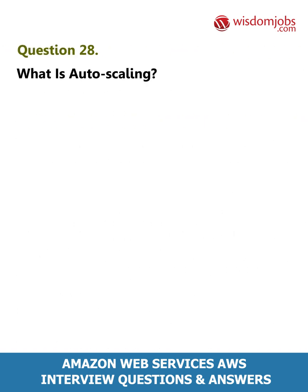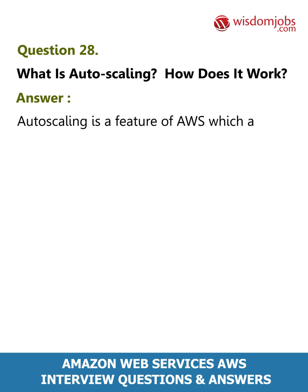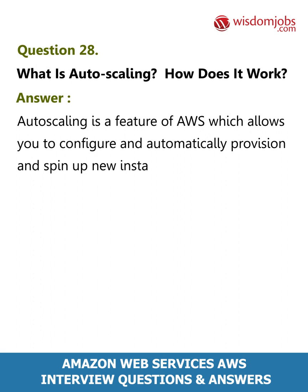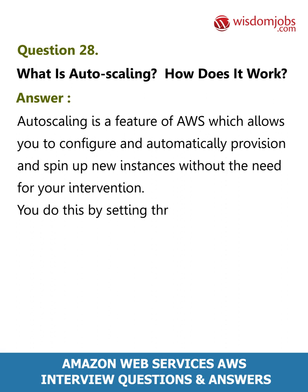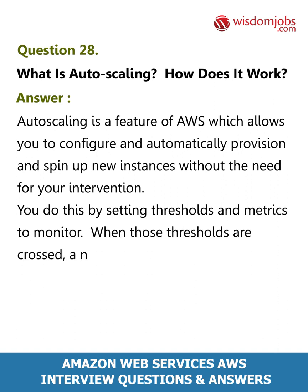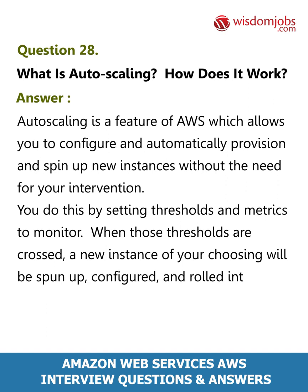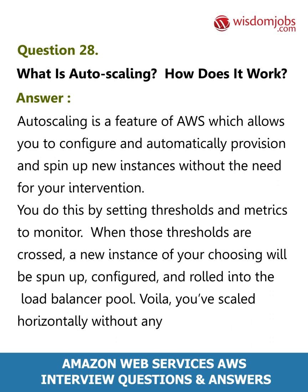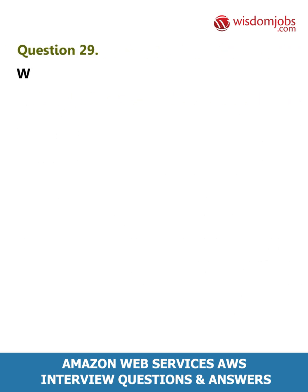Question 28: What is auto scaling and how does it work? Answer: Auto scaling is a feature of AWS which allows you to configure and automatically provision and spin up new instances without the need for your intervention. You do this by setting thresholds and metrics to monitor. When those thresholds are crossed, a new instance of your choosing will be spun up, configured, and rolled into the load balancer pool — you've scaled horizontally without any operator intervention.